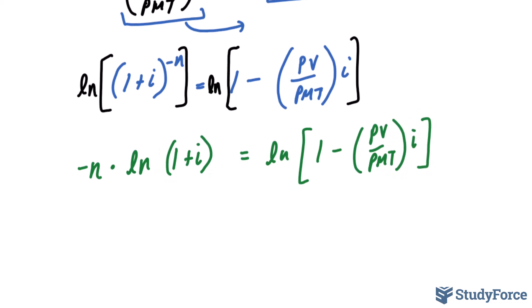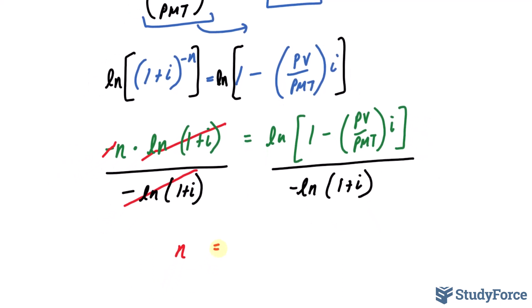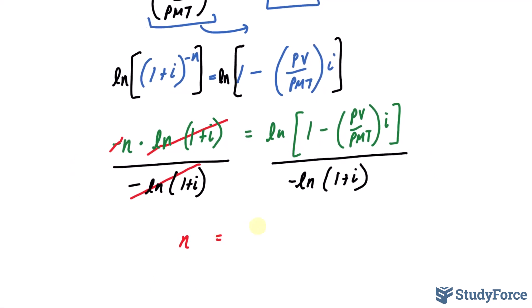At this point, we're almost done. All we have to do is divide both sides by negative ln 1 plus i. By doing this, this factor and that factor cancel out, and so does the negative. So we have n, which is the total number of periods, is equal to what you see on the right side.